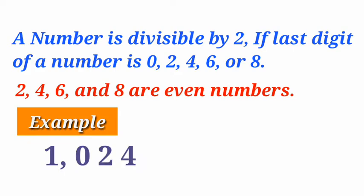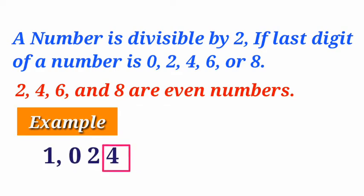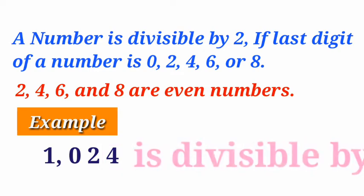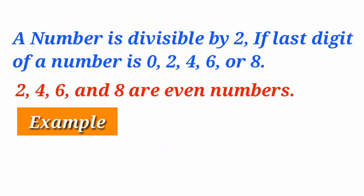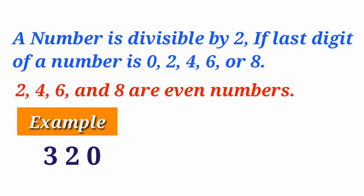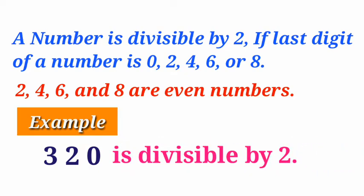For example, 1024. In this number, the last digit is 4. It is an even number, so 1024 is divisible by 2. Look at another example: 320. In this number, the ones place digit is 0. As per the divisibility rule, 320 is also divisible by 2.